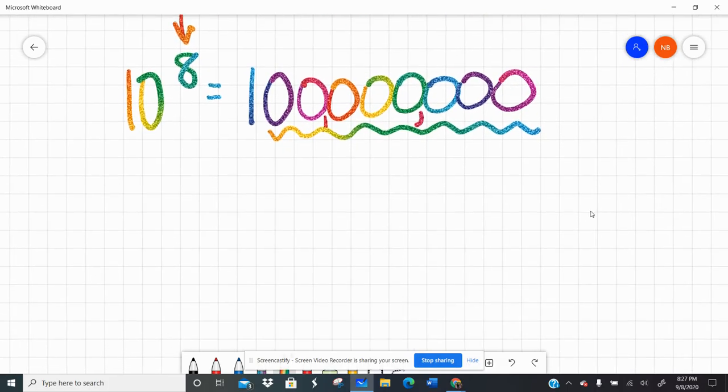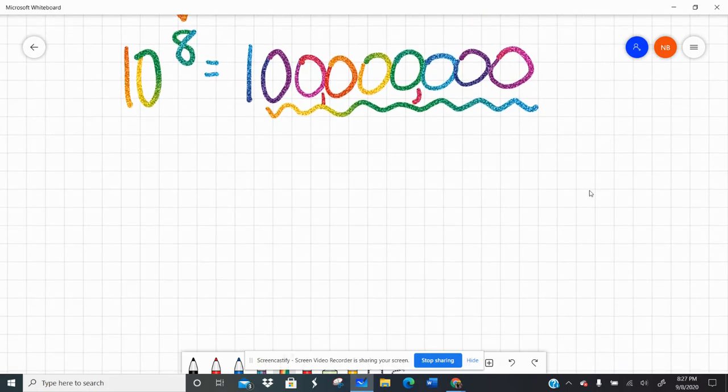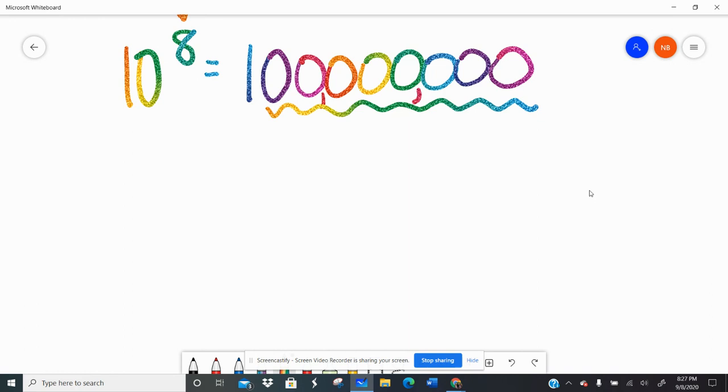The same is true for negative exponents, except now we're going to take the reciprocal of the positive number. So 10 to the negative 1 is 1 tenth, which is 1 over 10.